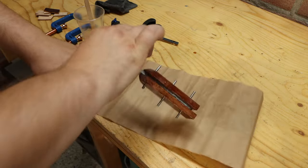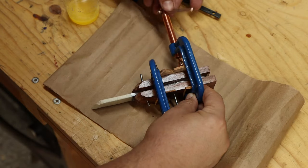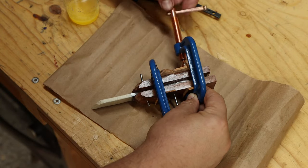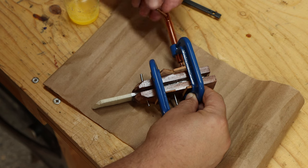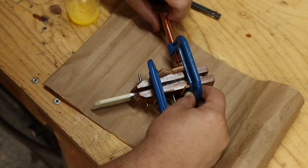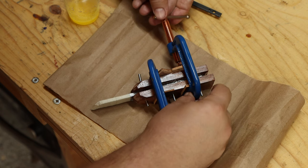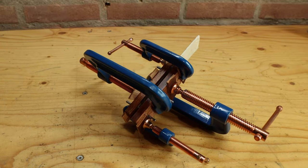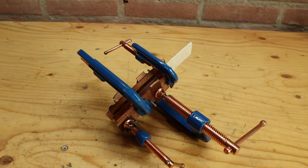With everything put together, I clamp it all together using these C-clamps. Not too tightly because the epoxy holds everything together and you don't want all of it to be squeezed out. I let it cure for 24 hours before moving on to shaping the handle.